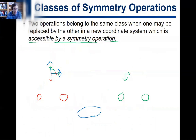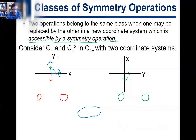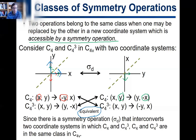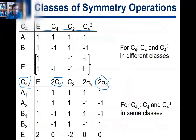Because there's no sigma-d in C4, the two different Cartesian coordinate systems are not interconvertible by any symmetry operation. The only operations are E, C4, C2, and C4³, and you cannot get from one coordinate system to the other by rotations or identity alone. Because of that, C4 and C4³ must be in different classes.